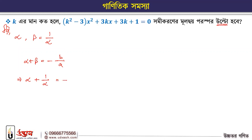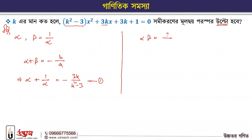B is 3k, so the sum of the roots alpha plus 1/alpha equals minus b/a, which is 3k divided by x, so that is 3k. We have to write the ratio in quantity. Alpha times 1/alpha is the product, which equals c divided by a.